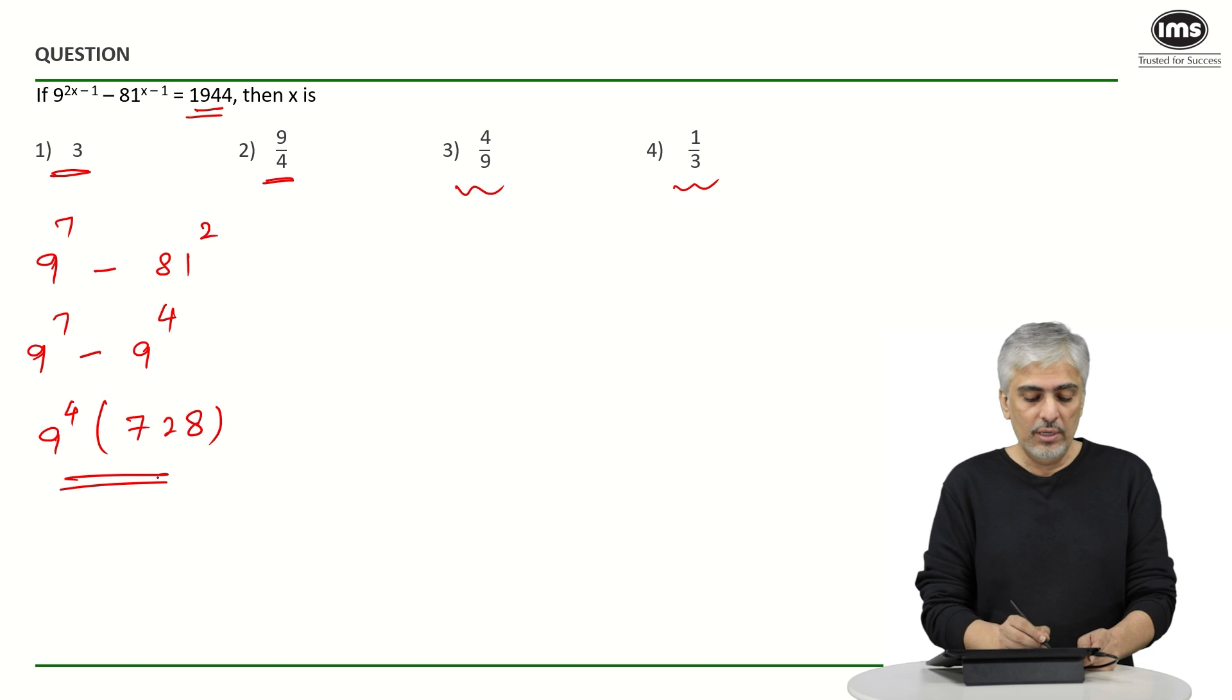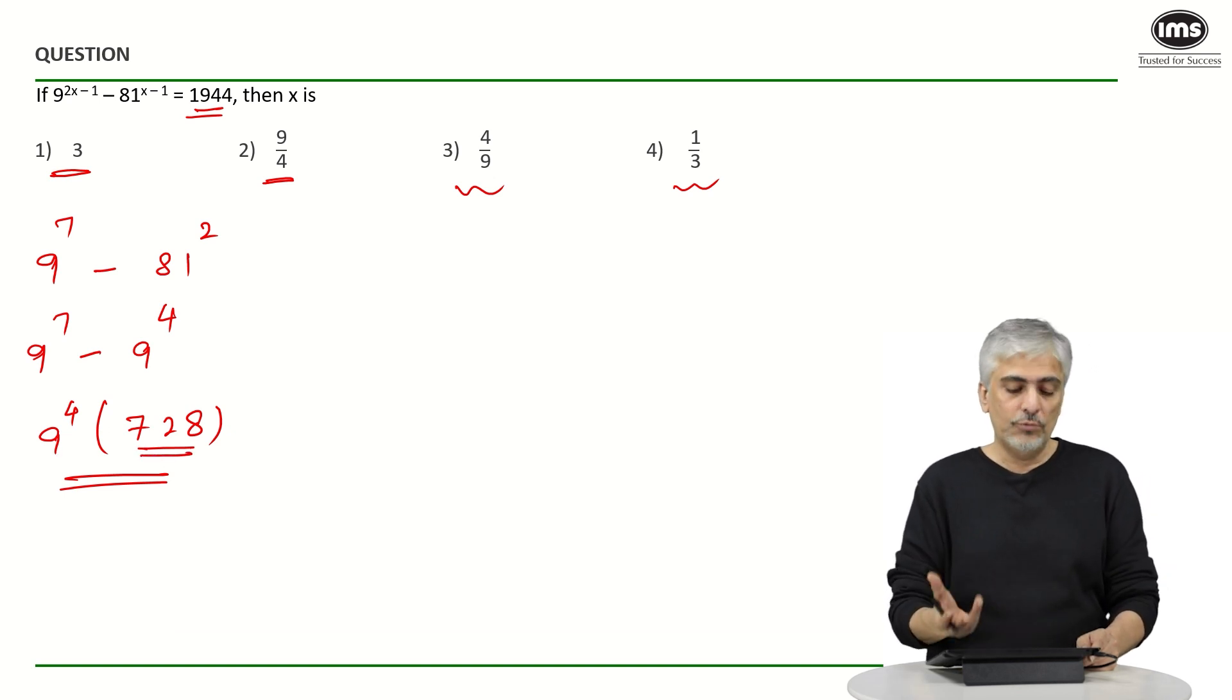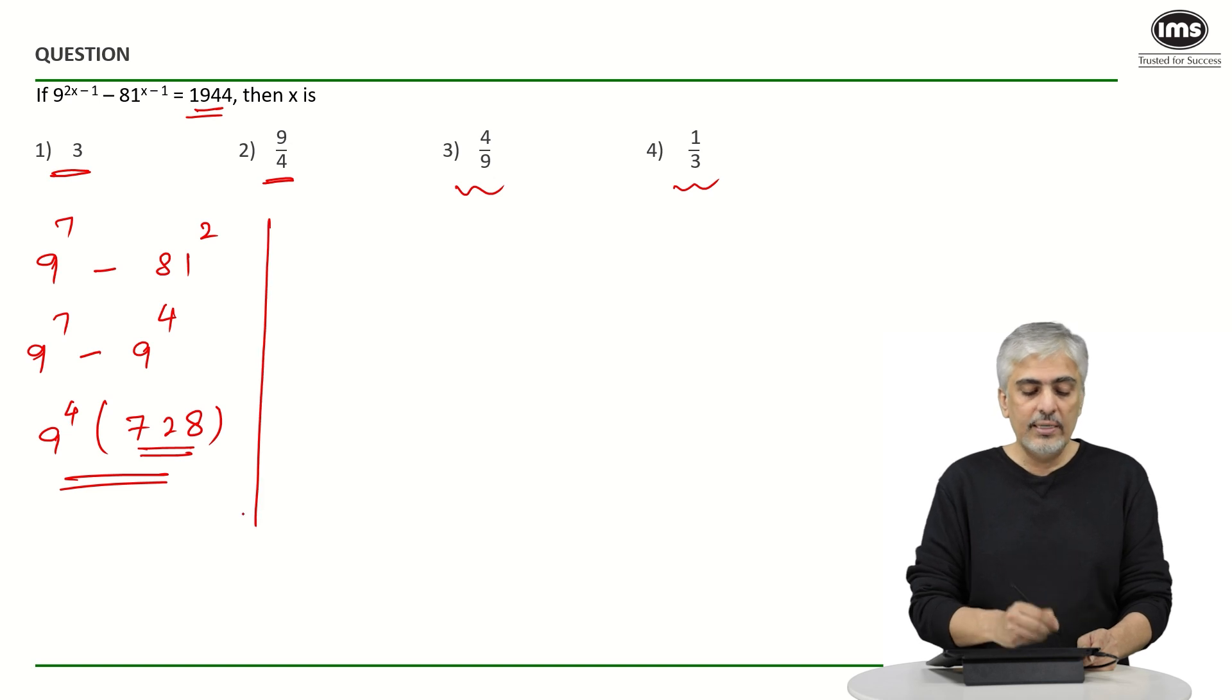1944 is a pretty small number, while 728 multiplied by 9 to the 4th is a huge number. So that is not going to be my answer.